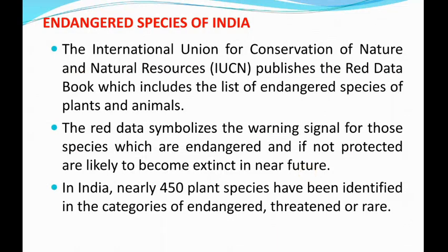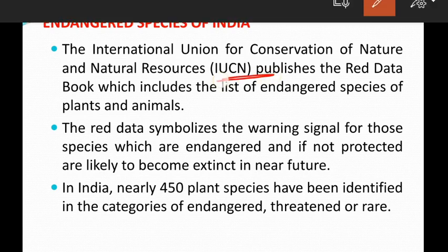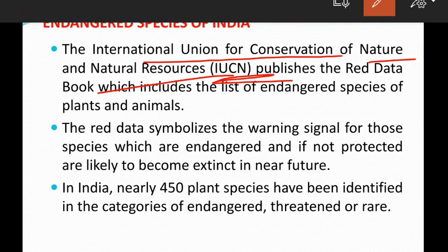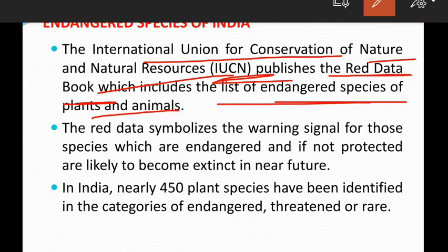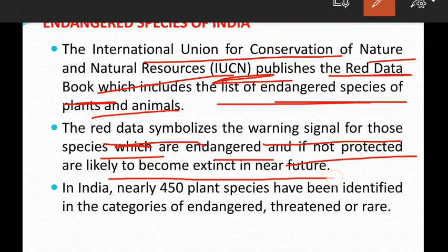Coming to endangered species of India: the International Union for Conservation of Nature and Natural Resources, that is IUCN, publishes the Red Data Book, which includes the list of endangered species of plants and animals. The Red Data Book symbolizes a warning signal for those species which are endangered and if not protected are likely to become extinct in the near future.